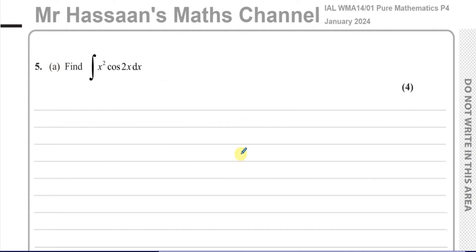It doesn't say to use integration by parts, but obviously we have two functions which are totally different from each other — there's no function inside a function. It's not the differential of a function multiplied by the original function, nothing like that. So we cannot reverse the chain rule here, and we have to use integration by parts.